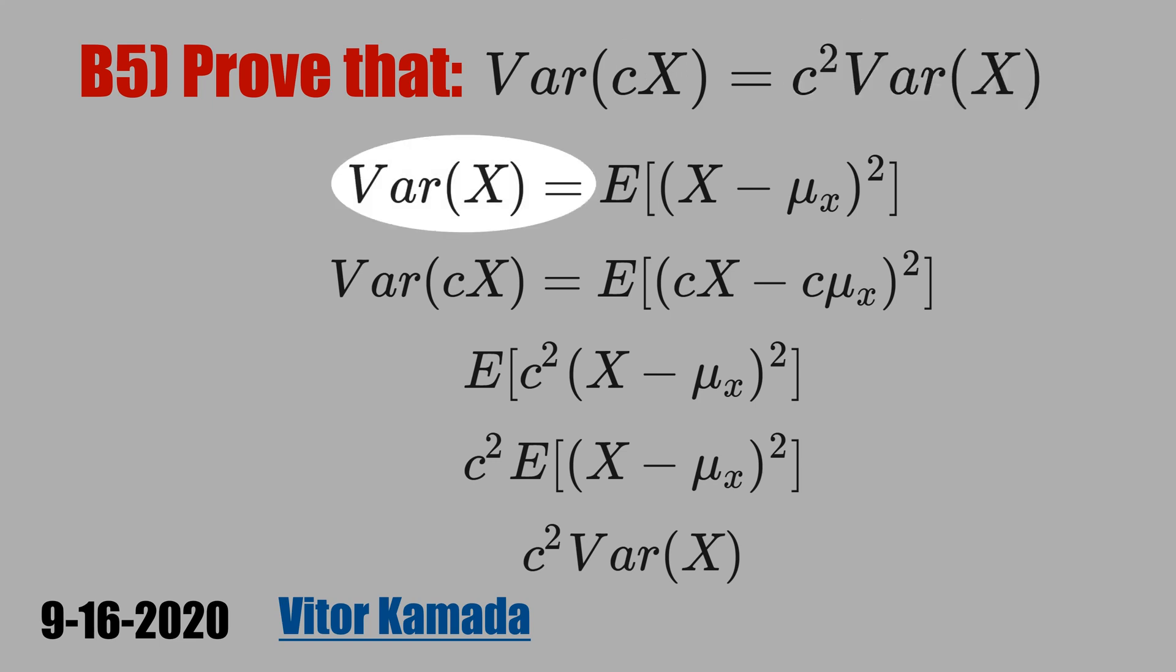Let's start with the definition of the variance of X. You have the random variable X, you subtract the mean of X, and then we square this deviation, and then you take the expectation.